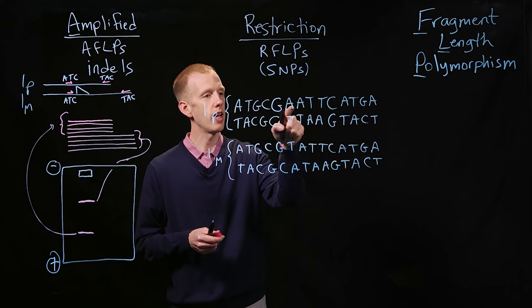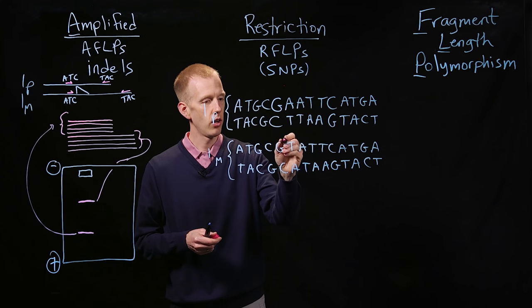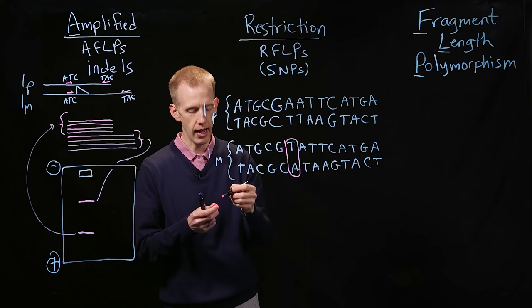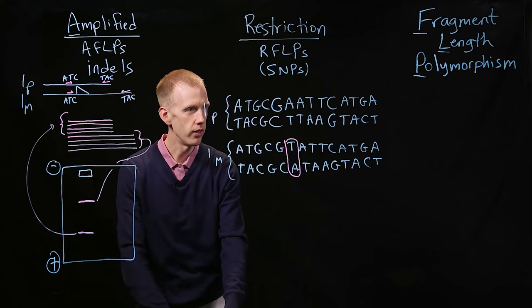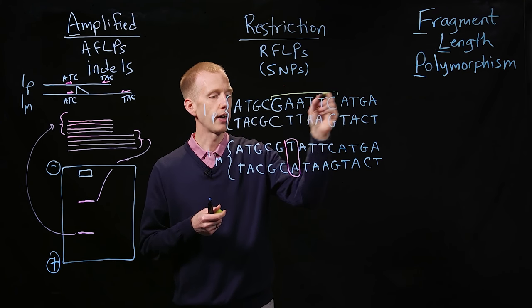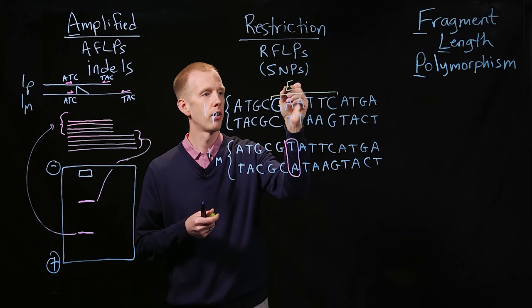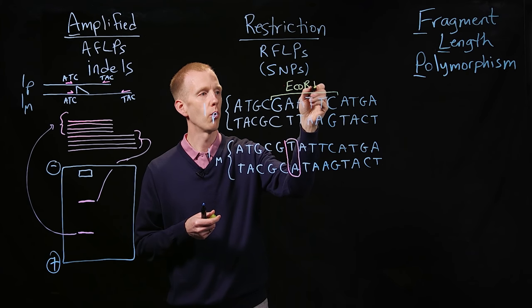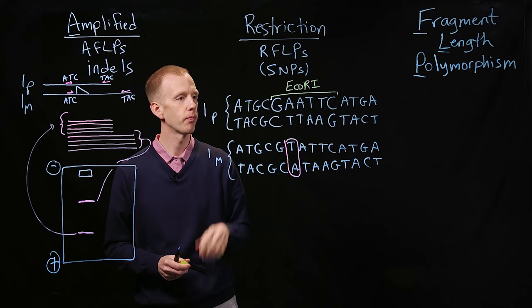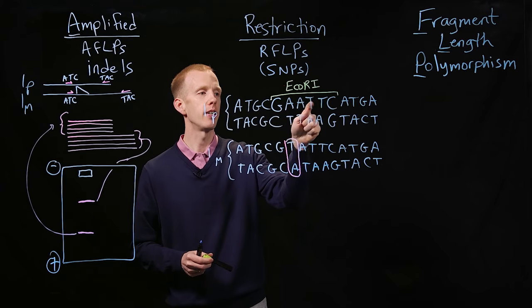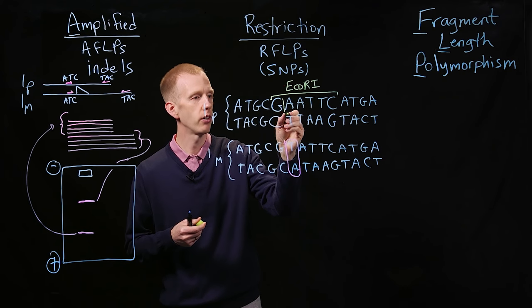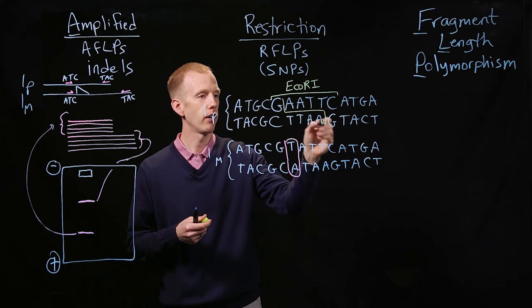So here, where we had G, A, A, T, T, C, we have a difference. Now we have a T instead of an A. And remember, this was a recognition site for the ECO-R1 restriction endonuclease, a concept we've talked about already. And that enzyme, when it recognizes G, A, A, T, T, C, will cut the DNA molecule in a staggered fashion, like that.